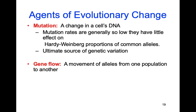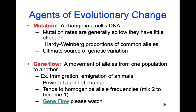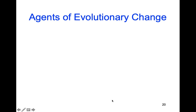Gene flow is another reason evolution happens in a population — the movement of alleles into and out of populations through immigration and emigration. This tends to homogenize allele frequencies, meaning it mixes two alleles to become more like one allele — like mixing two flower colors to become more like one color. There's a short video linked on gene flow; please watch that.